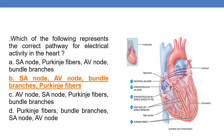The electrical activity begins at the Sino-Atrial node, then passes to the Atrio-Ventricular node, then to the Atrio-Ventricular bundle or bundle of His, then to the right and left bundle branches, and finally to the Purkinje fibers. This is the correct pathway for electrical activity in the heart.